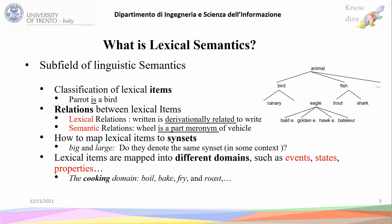For example, in the cooking domain, the lemmas that will be in this domain are: boil, bake, fry, and roast. In general, in lexical semantics, it will form a network — the sense-sets connected together through lexical semantic relations.